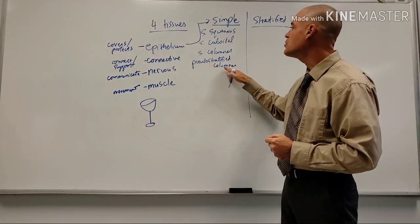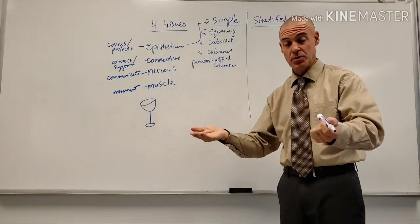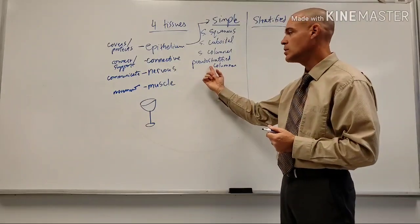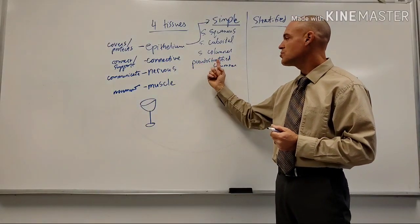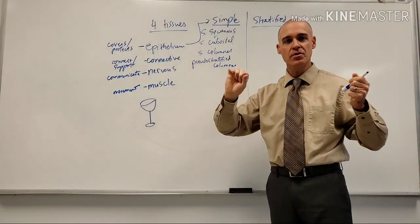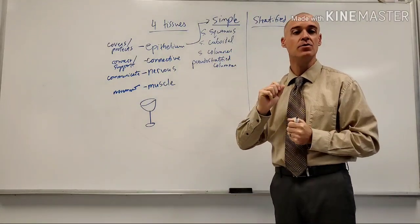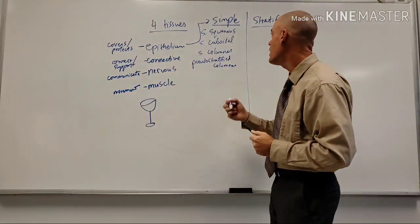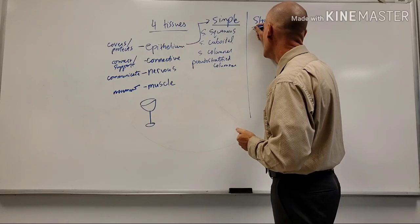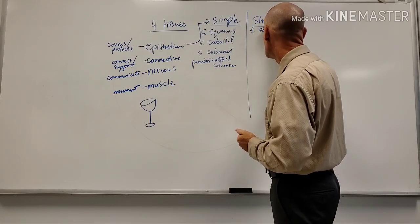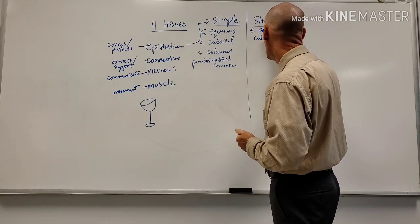Pseudostratified columnar epithelium is seen primarily in the respiratory system, which also makes mucus, so we see goblet cells here as well. It's false stratified - a single layer of cells but with a slightly stratified appearance even though it's not actually stratified.